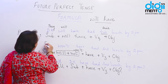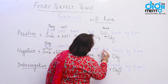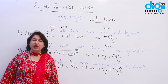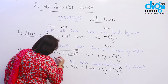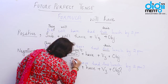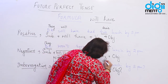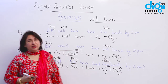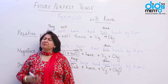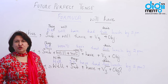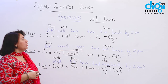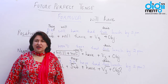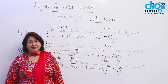The negative would be: 'They won't have had their lunch by 2 p.m.' The interrogative: 'Will they have had their lunch by 2 p.m.?' You can use any activity — by evening, will he have reached there? — and practice making all three forms.